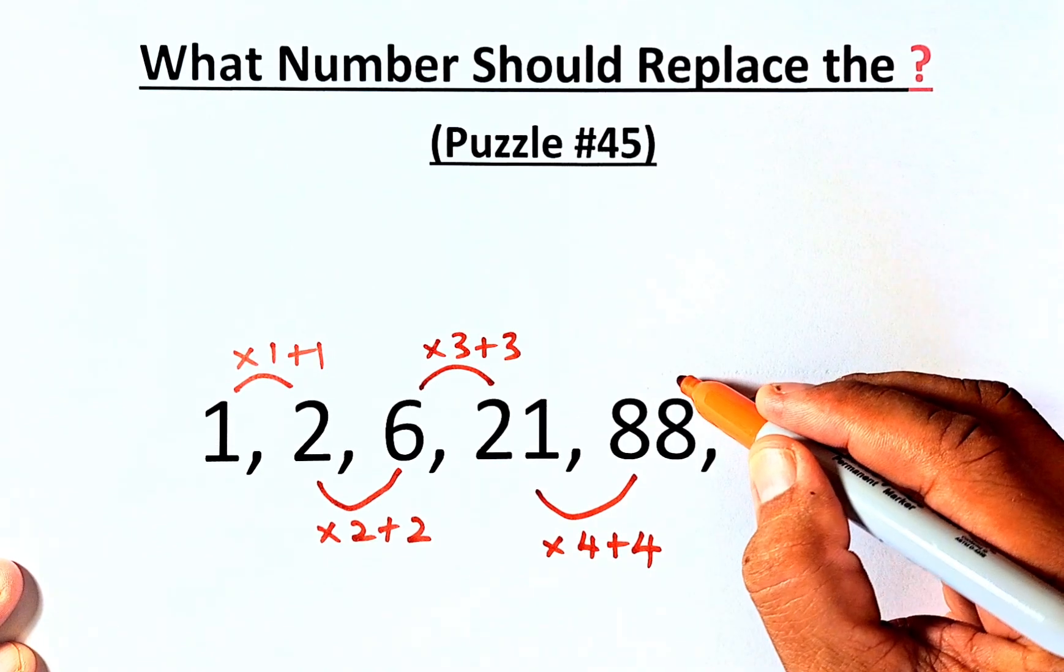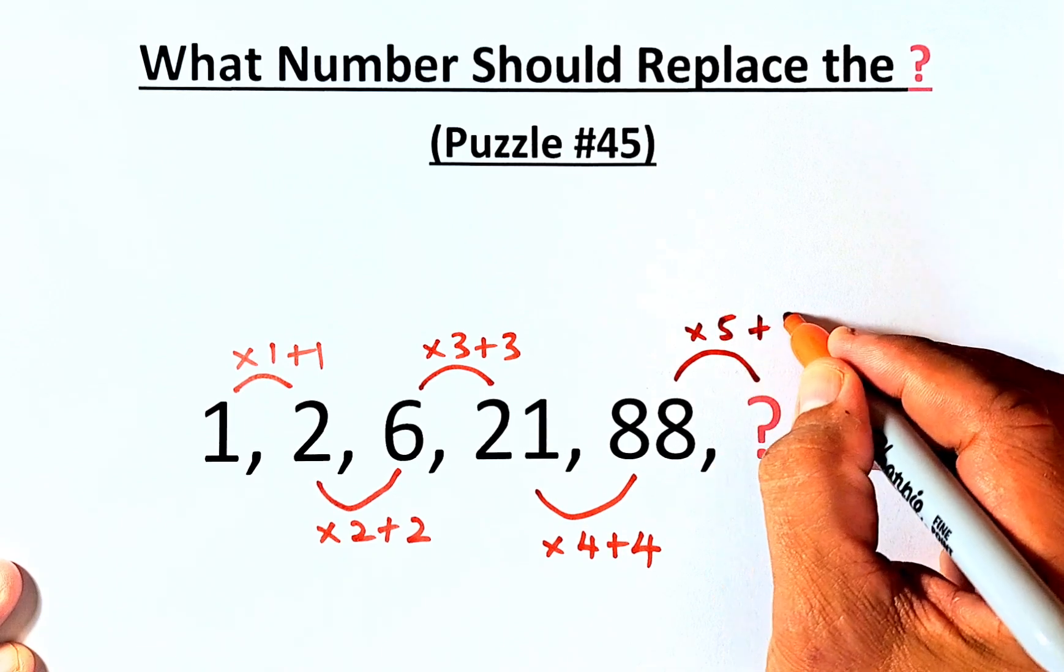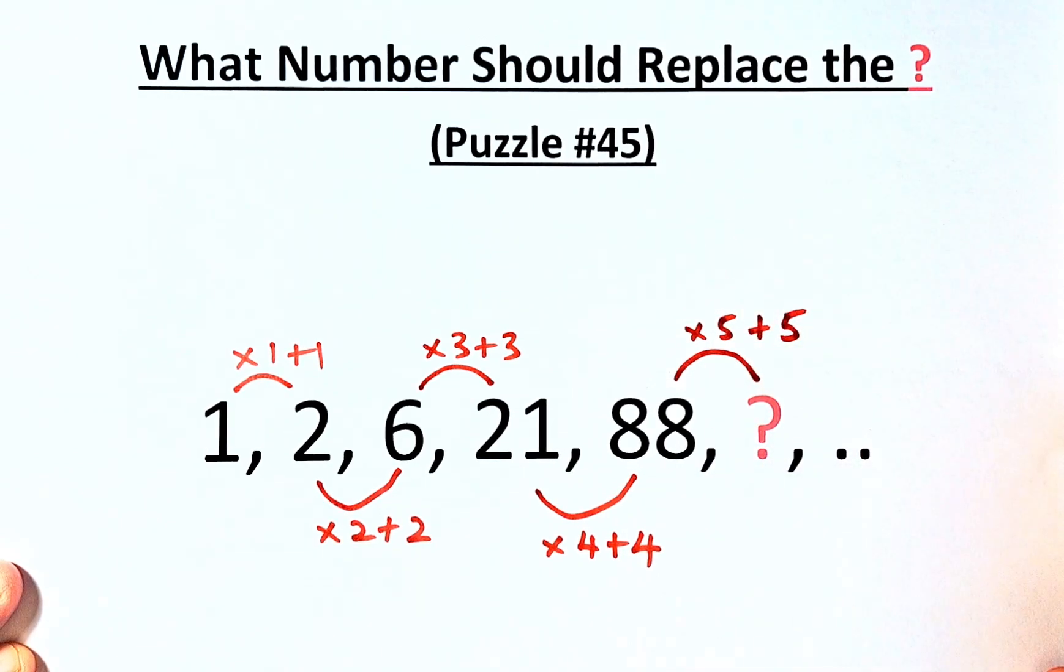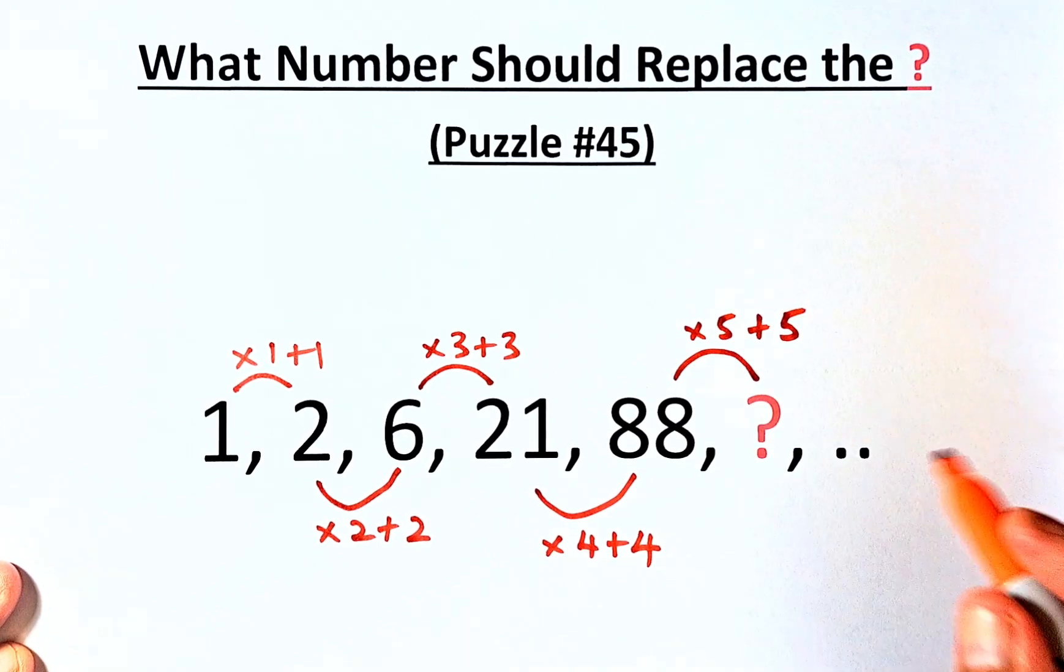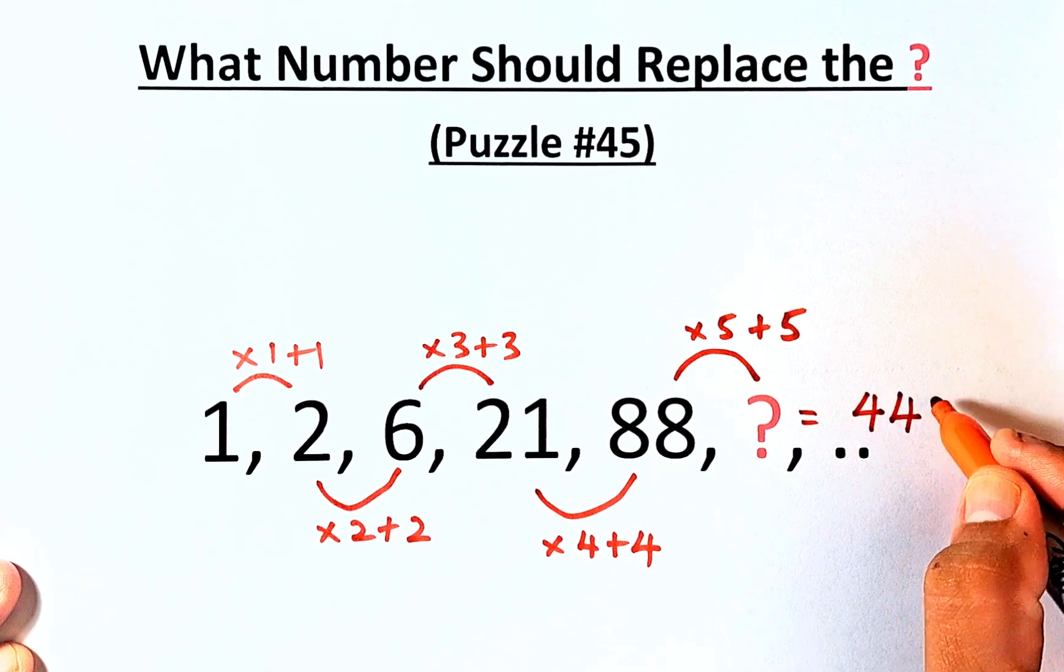So last but not least, we are going to move from 88 to the question mark. So of course, we're going to multiply by 5 and add 5. 88 times 5 is 440. And 440 plus 5, the question mark is going to be equal to 445.